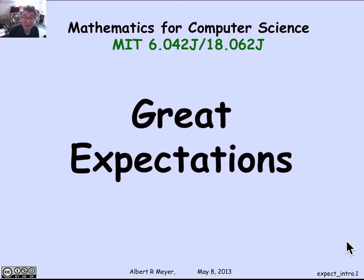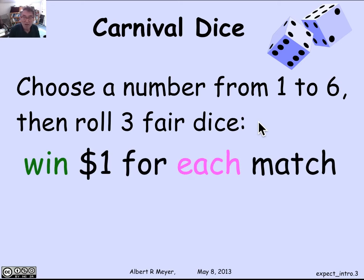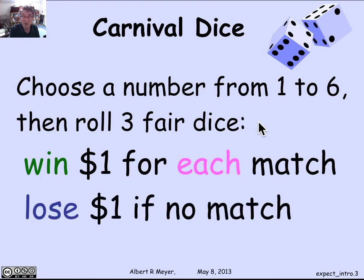Let's begin with a motivating example, which, as is often the case, will come from gambling. There's a game played in casinos called Carnival Dice, where you have three dice. You pick your favorite number from one to six, then roll the three dice — each fair, so each has a one in six chance of any given number. The payoff: for every match of your favorite number, you get $1, and if none of the dice show your favorite number, you lose $1.